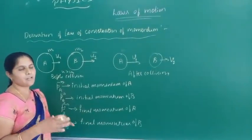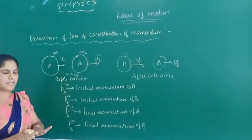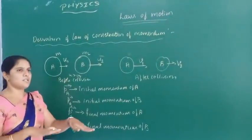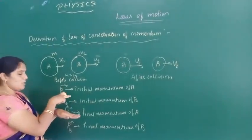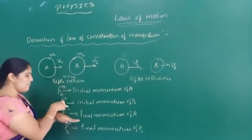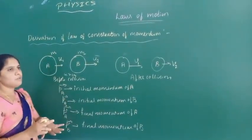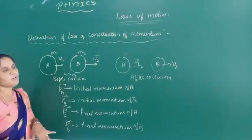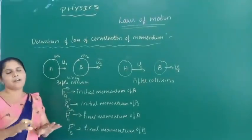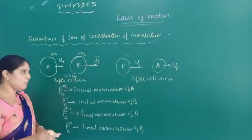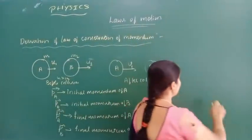We are going to prove the law of conservation of momentum. That means total momentum before collision is equal to total momentum after collision. Total momentum before collision is PA plus PB. Total momentum after collision is PA dash plus PB dash. So we need to prove PA plus PB is equal to PA dash plus PB dash.